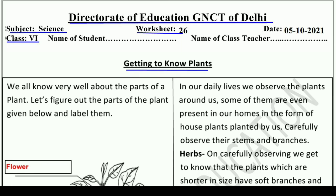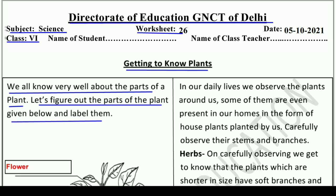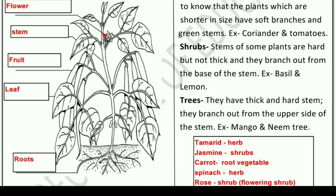Now let's start and understand together. We all know very well about the parts of a plant. Let's figure out the parts of the plant given below and label them. This part is flower, and this one is stem. This is fruit, and these are leaves. And this is roots.